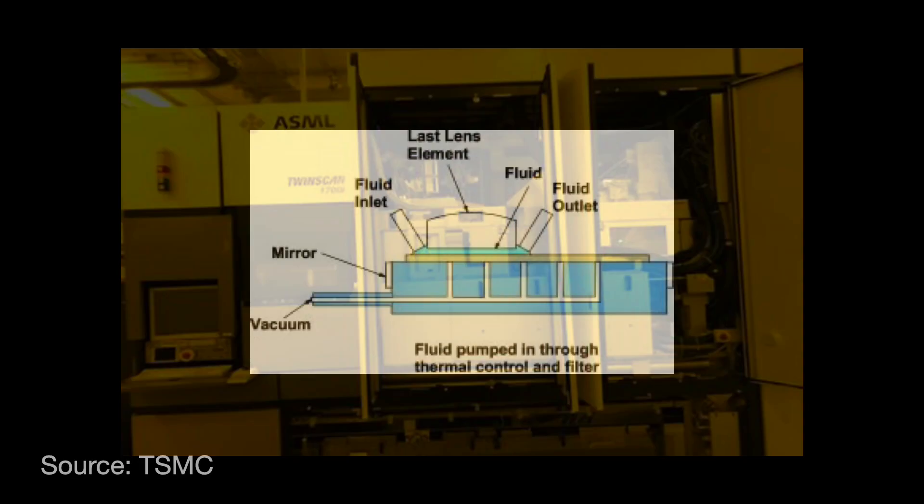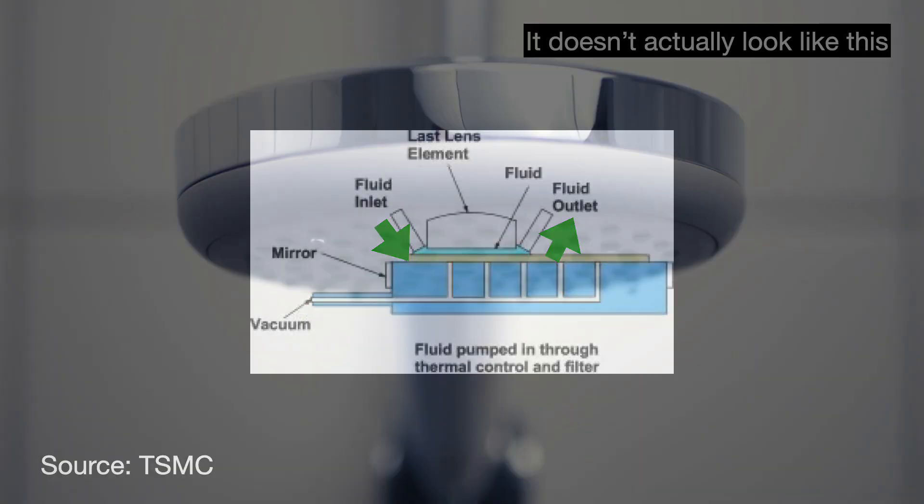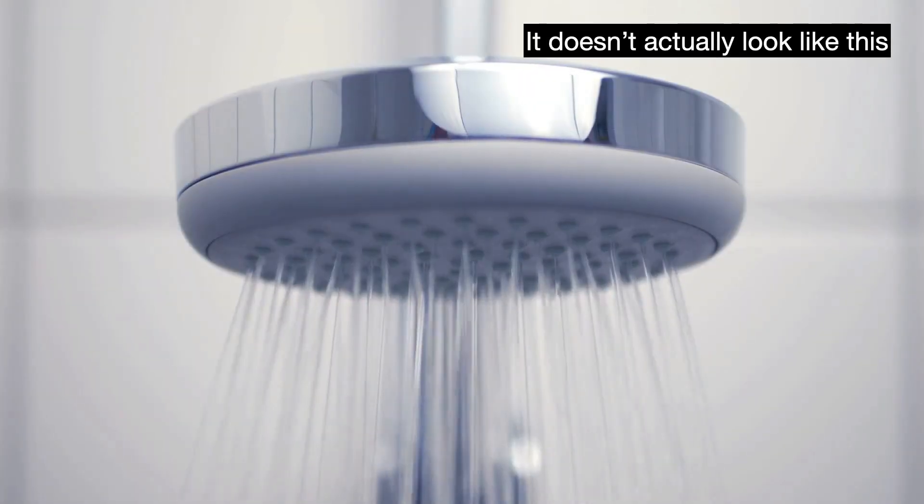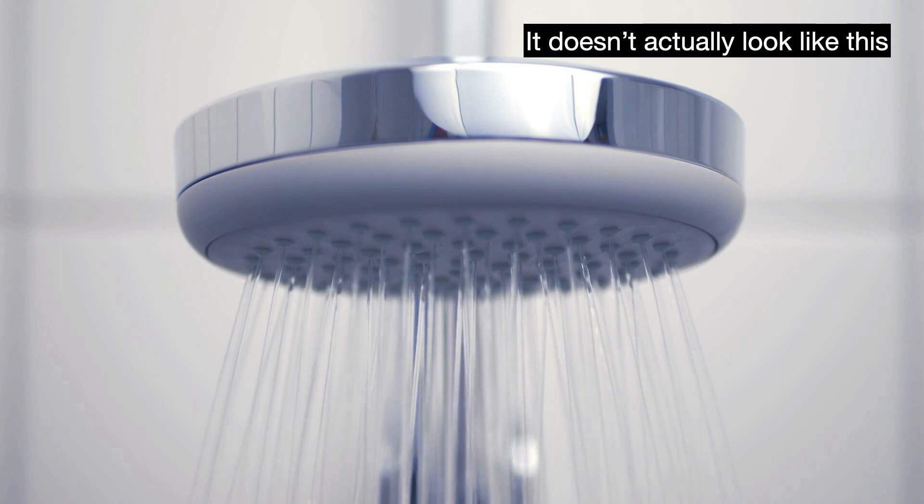They ended up choosing another setup called the shower configuration. Here, you pump water to flow only over the part of the wafer that is being exposed by the lens. After the lens passes by, a suction picks up the water again. This conceivably works better, and the foundries eventually chose this approach. The showers use less water overall, it can be integrated into existing 193 nanometer machines, and technicians do not have to wait for a bath to fill and empty first.